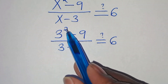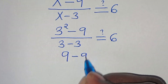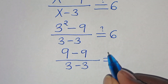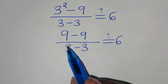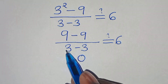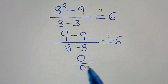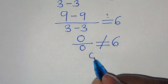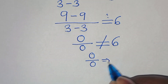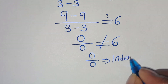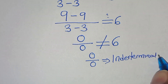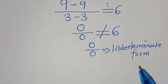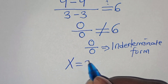We have 3 squared which is 9, minus 9 divided by 3 minus 3. That gives us 9 minus 9 over 3 minus 3, which is 0 over 0. This is not equal to 6. So 0 over 0 is actually an indeterminate form, and 0 over 0 is not equal to 6. This means x equals 3 does not satisfy the equation.